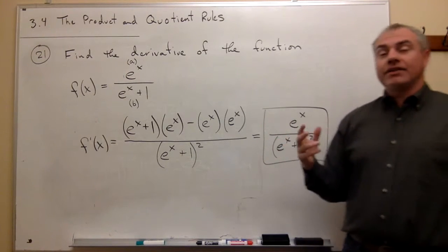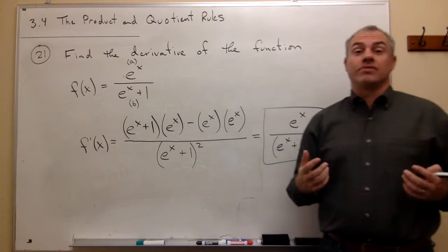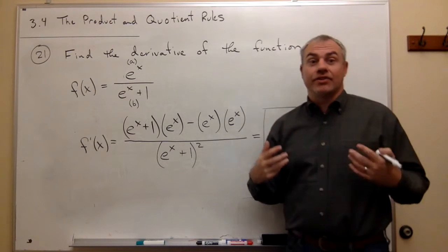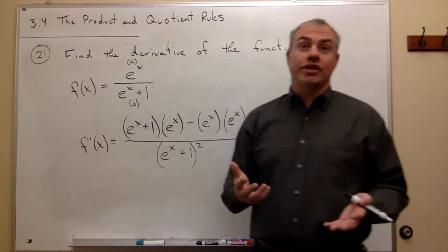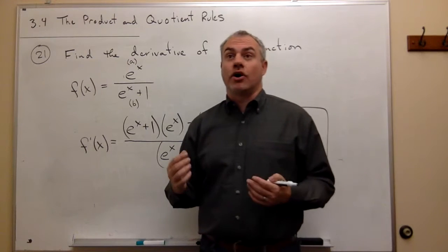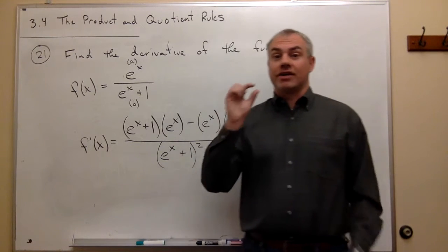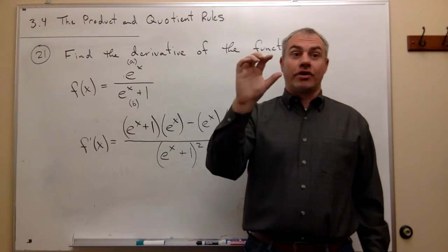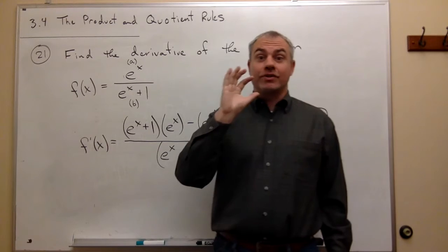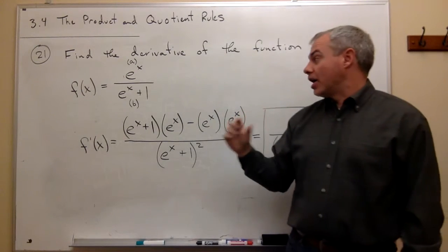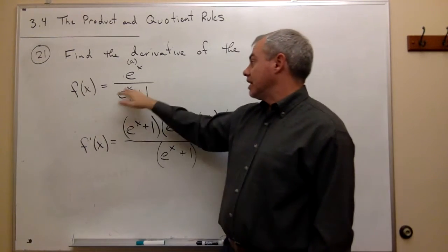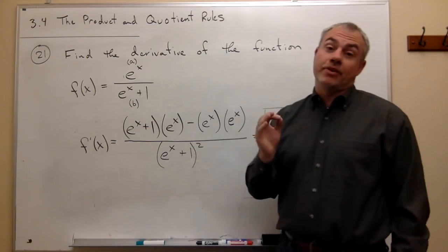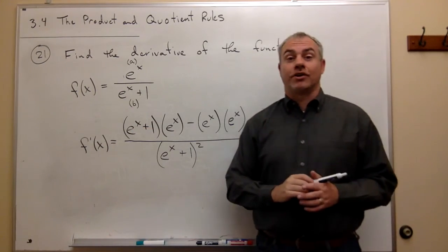The main thing you need to remember in these problems is how to take the derivative of a quotient. What you should always remember is: write the bottom down first without taking the derivative. Take the bottom — e to the x plus 1 — write it down first. If you remember that, you're going to be good to go.